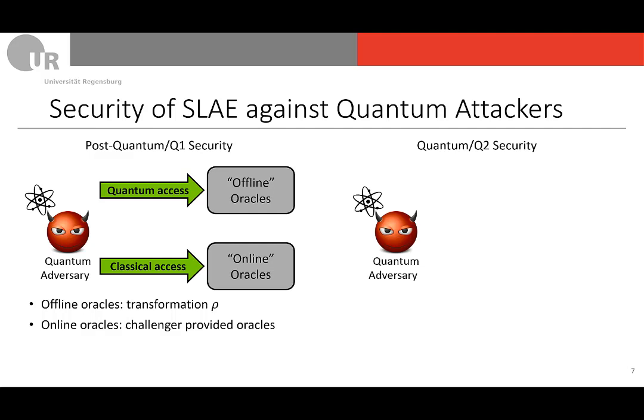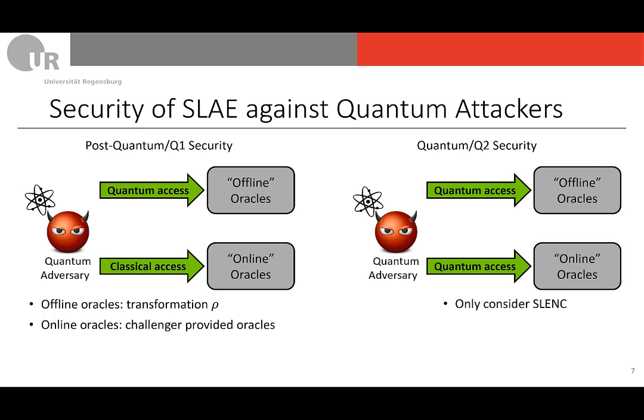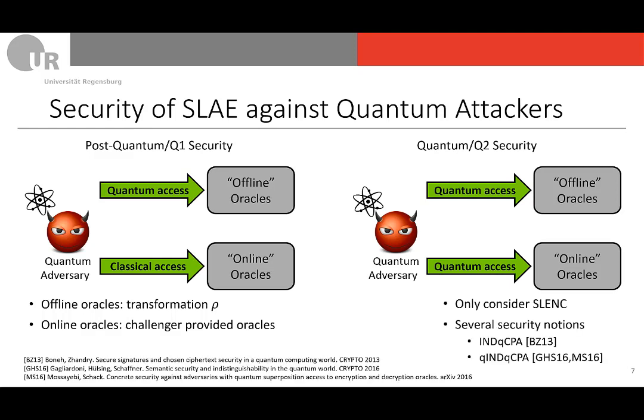On the other hand, we also consider the quantum or Q2 security of SLAY. Again, the adversary gets access to offline and online oracles. For offline oracles the adversary still gets quantum access, but now also for the online oracles the adversary gets quantum access. For this part we only consider the underlying encryption scheme SL-ENC, and in particular we consider several security notions: int-QCPA by Boneh and Zhandry, as well as q-int-QCPA security notions by Gagliardoni, Hülsing and Schaffner, as well as Mosayebi and Schack.